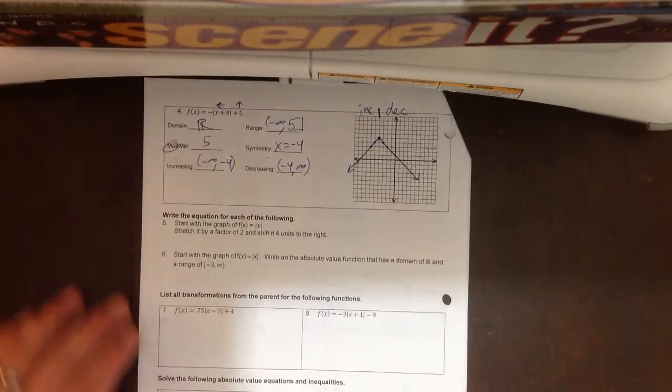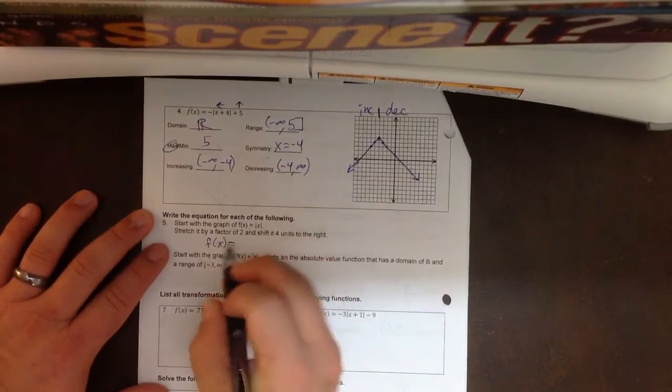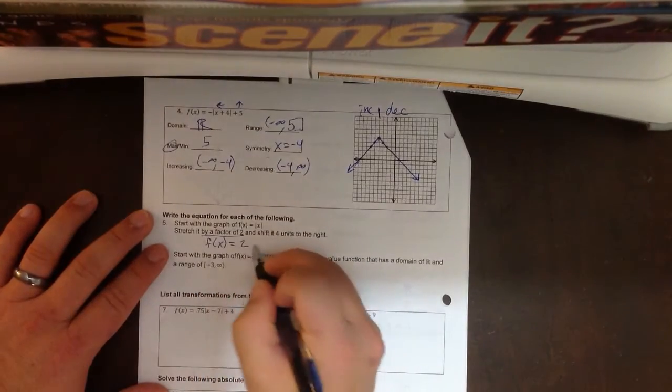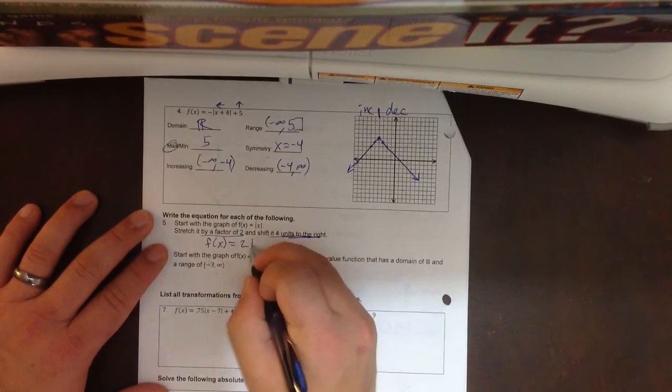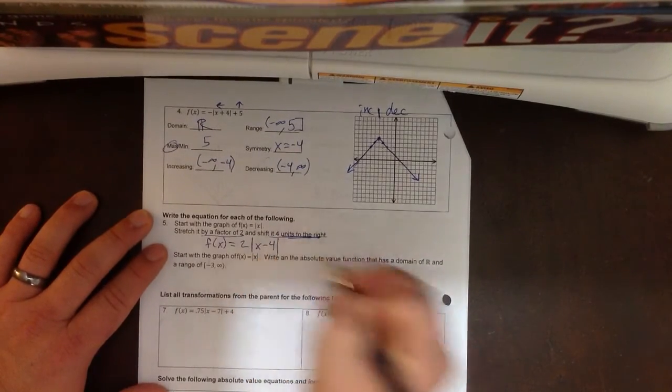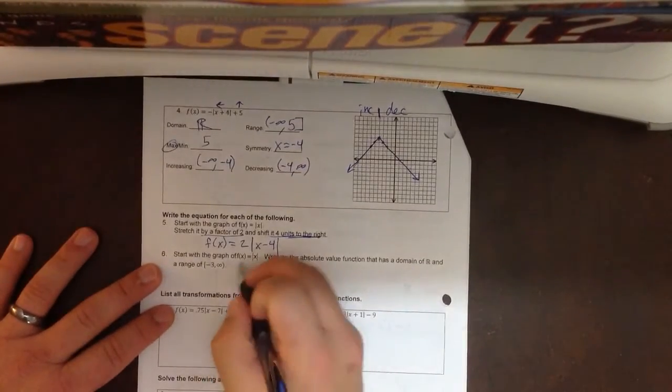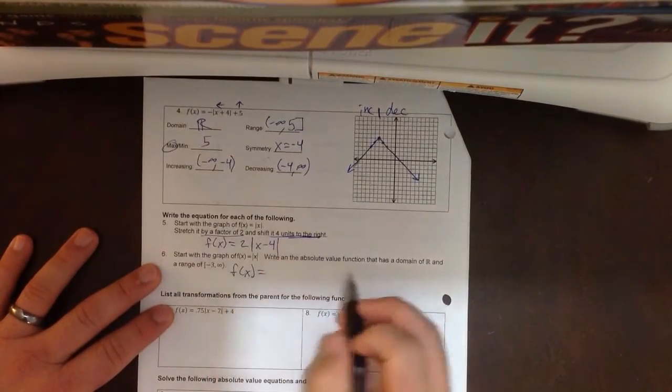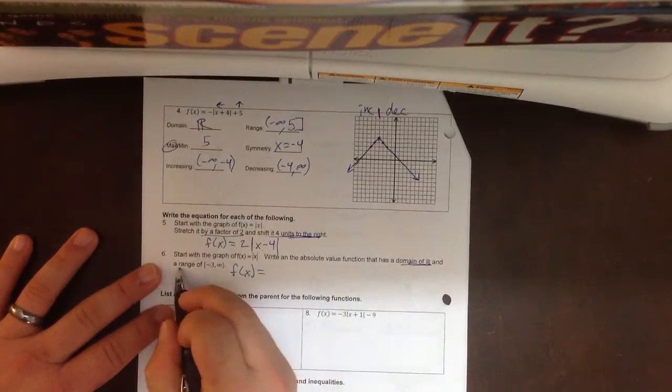Alright, number 5. We're doing an absolute value of x. I'm going to stretch it by a factor of 2. That goes in front. It should have 4 units to the right. So that's going to go inside with the x, x minus 4. So again, f of x. Absolute value has a domain of all real numbers. So that's everything. And a range of negative 3 to infinity.